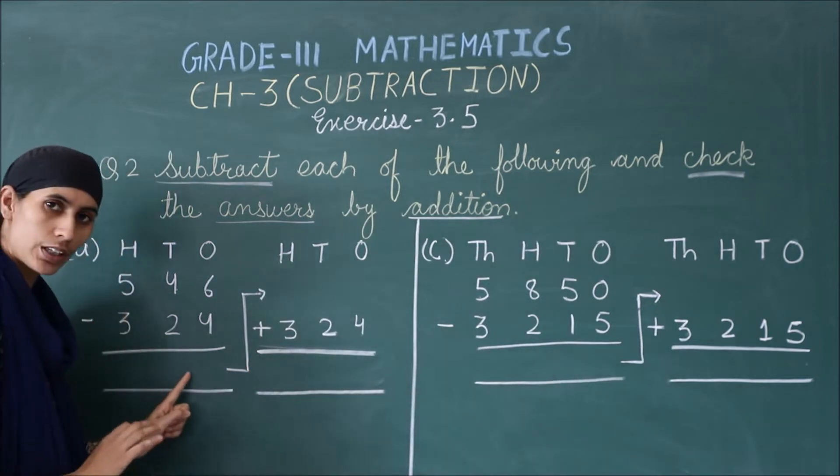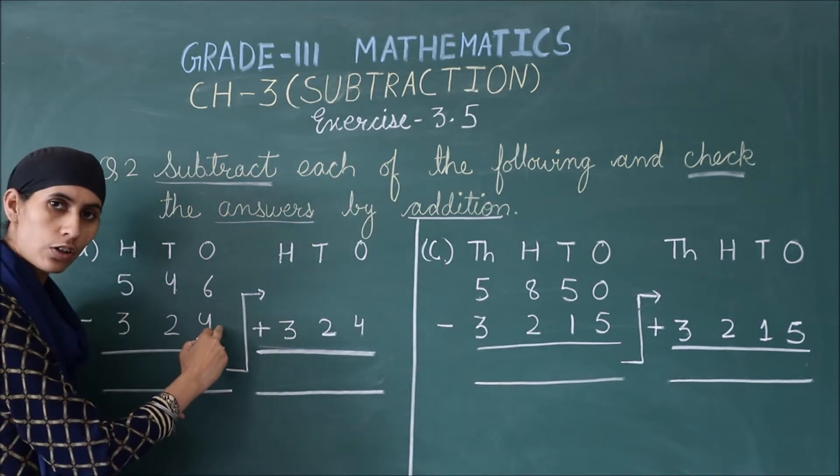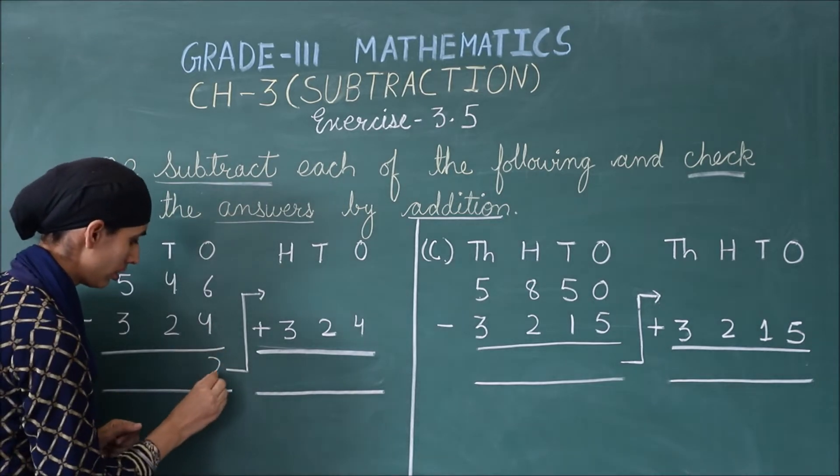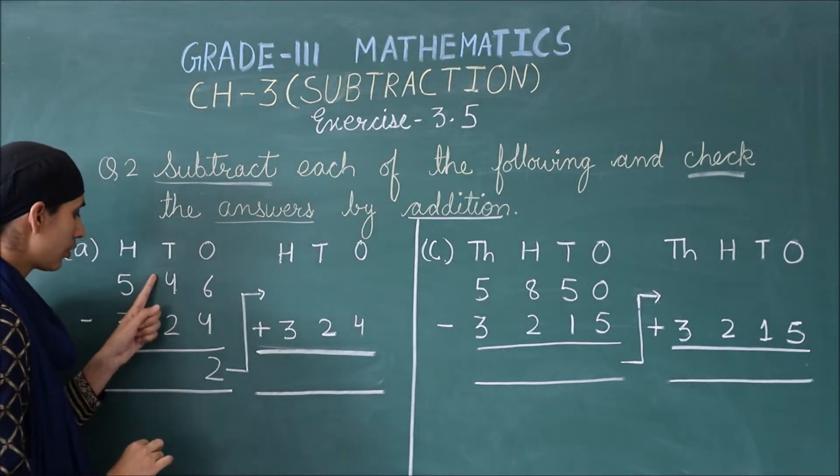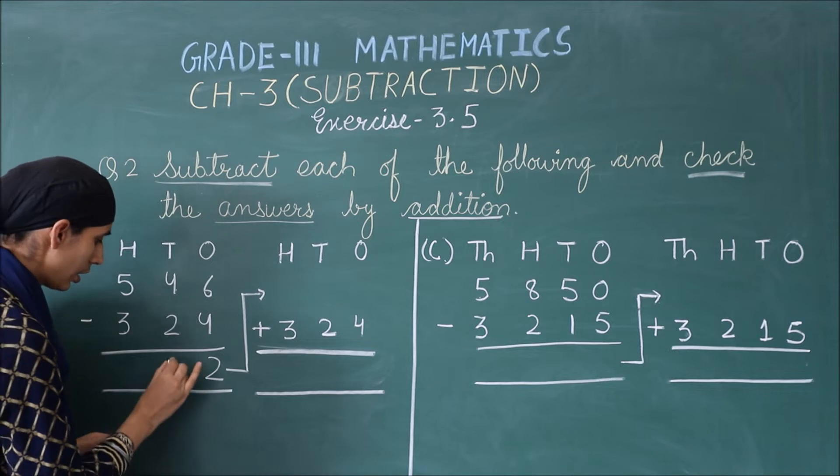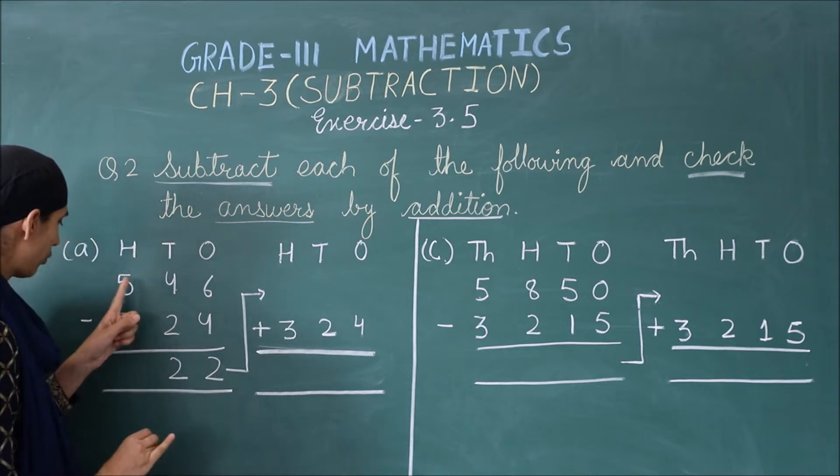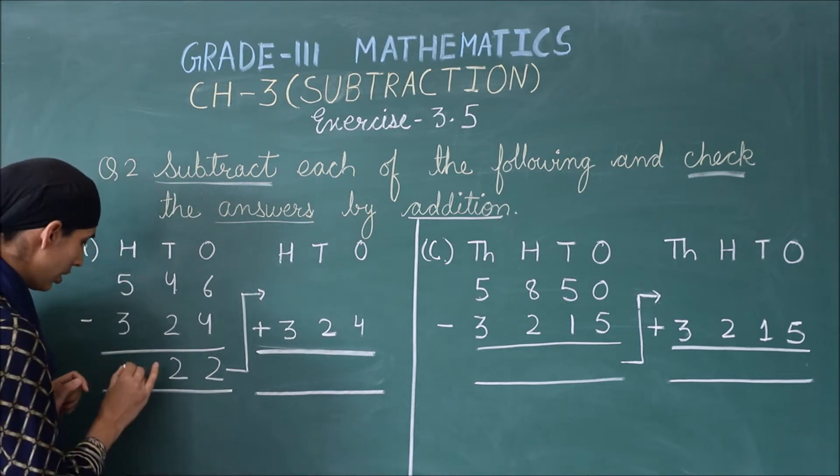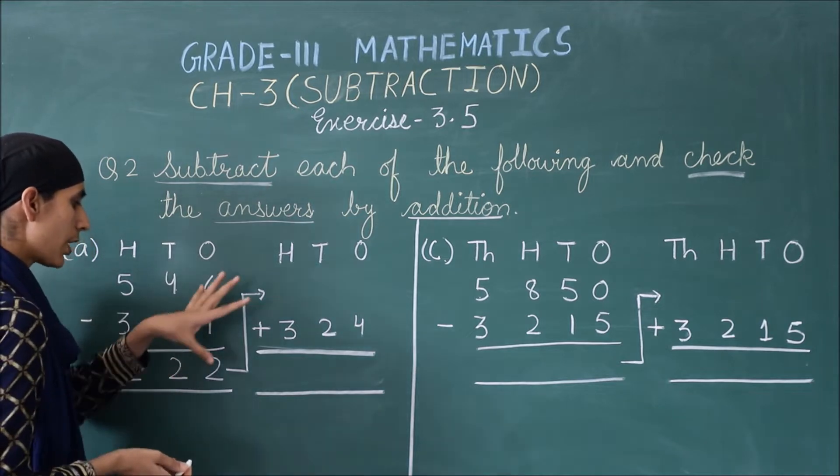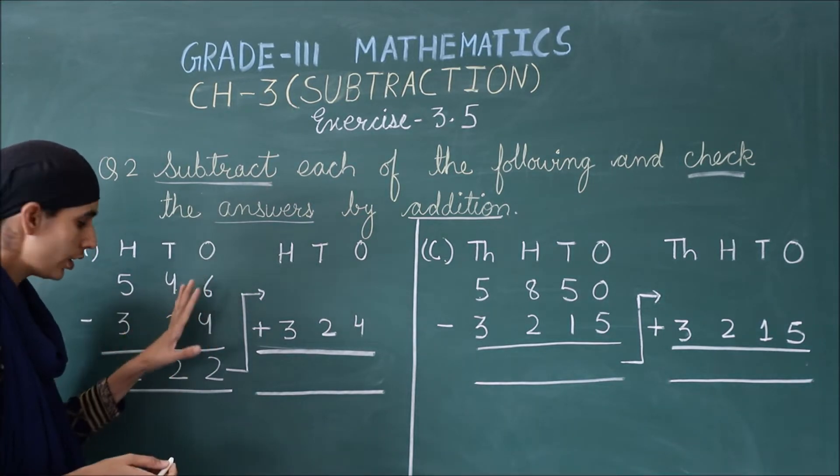I have part A here. 6 minus 4, what will be? 2. Then, 4 minus 2 is again 2. 5 minus 3 is again 2. So, this is our first step solved. Subtraction.